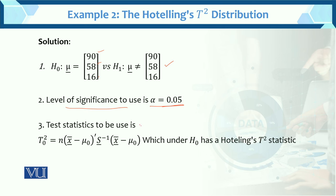The test statistic to be used is the one-sample T-square test. We are given which test statistic to use — the best statistic is Hotelling's T-square.